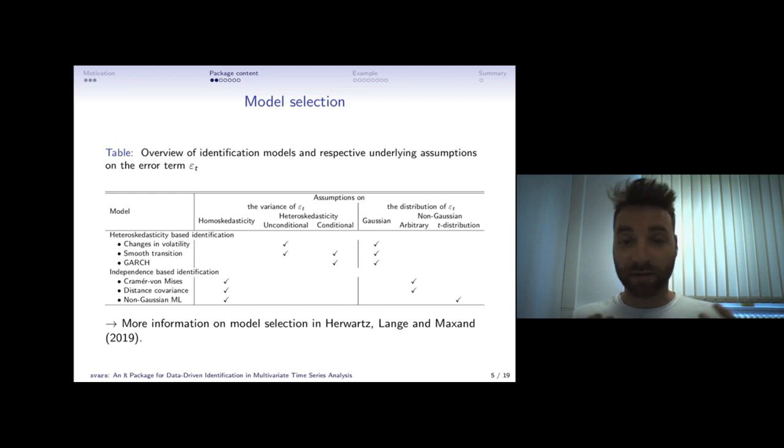The heteroscedasticity type models for instance need the particular type of heteroscedasticity in order to estimate these structural shocks. If you have no heteroscedasticity in the data you have no chance to get the true underlying dynamics. In case you want to know more about when to choose which model we have another study on the topic of model selection.